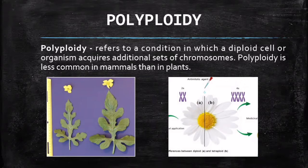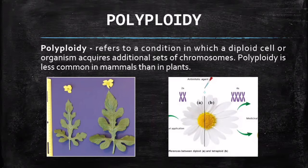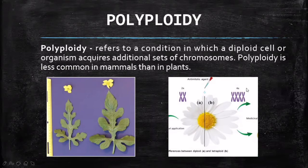Something else that can happen, though it's rare in human beings and occurs mostly in plants, is what we call polyploidy. Polyploidy refers to a condition in which the diploid acquires additional sets of chromosomes. It's less common in mammals than in plants. In plants — especially food plants — polyploidy is a good thing because once a plant has an extra or additional set of chromosomes it becomes bigger in size. They can be three sets, called triploidy, or four sets, called tetraploidy.